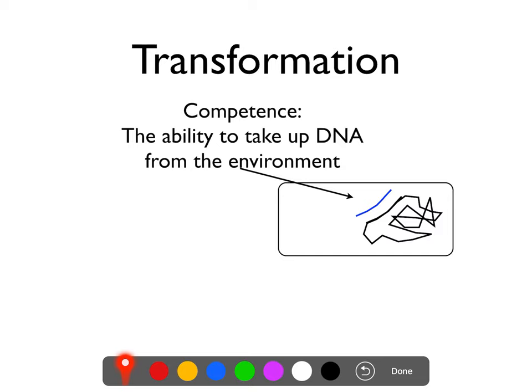Competent cells basically scavenge around — when they see some naked DNA out there, they just think maybe it's useful and suck it in. Some bacteria are naturally competent and naturally take up DNA from the environment, but while some bacteria are naturally competent, almost any bacteria can be forced into competence in a laboratory setting. Now, bacteria only replicate circular DNA, so if linear DNA is taken up, there's no way of replicating it just sitting there.